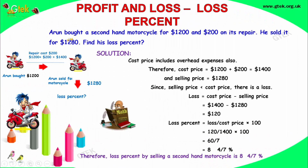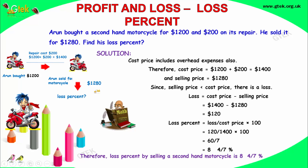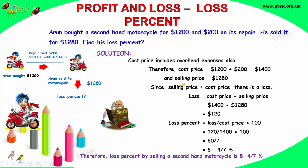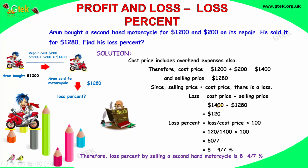Arun bought a second-hand motorcycle for $1200 and spent $200 on its repair. The total cost is $1400. Arun sold the motorcycle for $1280. If the selling price is less than the cost price, then it's a loss.